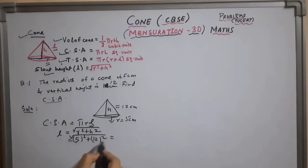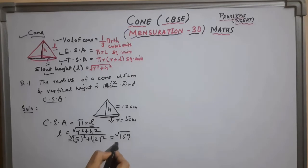this will be 25 plus 144, that is square root of 169. That is 13 cm. So l is 13 cm.